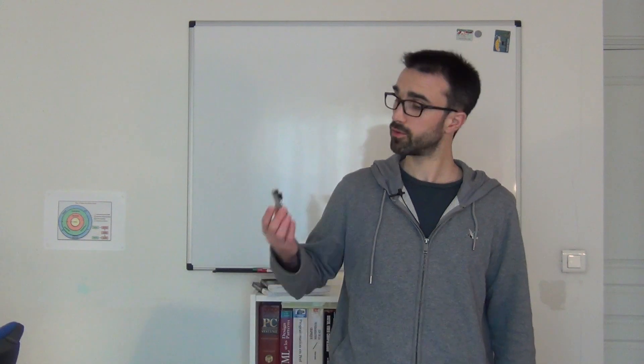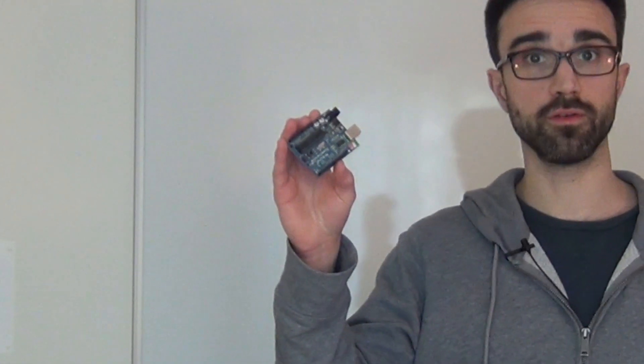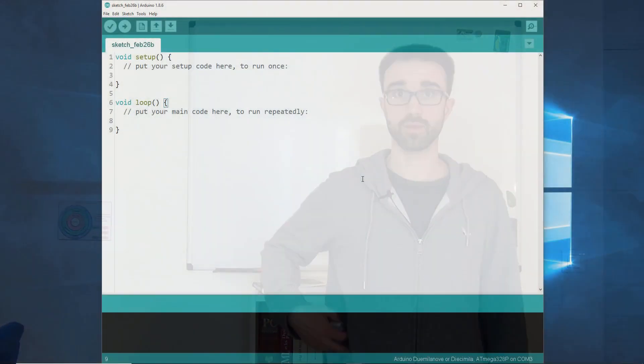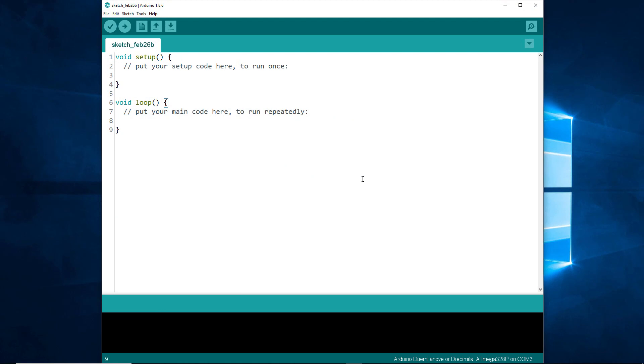In this tutorial, I'll use my old Arduino Doe Milanovae, but you can use any Arduino board because we won't use anything specific to this board. We'll only use the serial port. I just opened the Arduino IDE and connected my Arduino board.